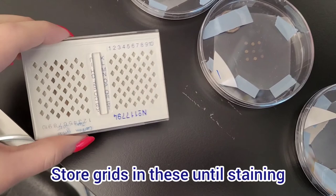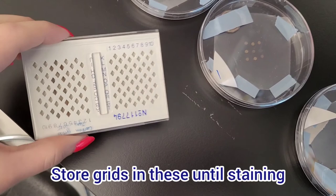Finally, use a tweezer and slowly remove the grids and store them until you want to stain them.